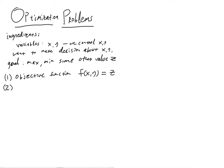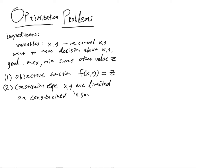The other thing we need is what we call a constraint equation. This constraint equation essentially says that x and y are limited or constrained in some way. We're going to say they're constrained by this equation: g of x comma y is equal to 0.